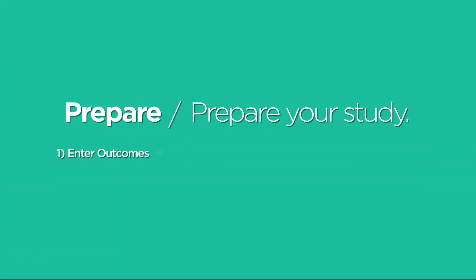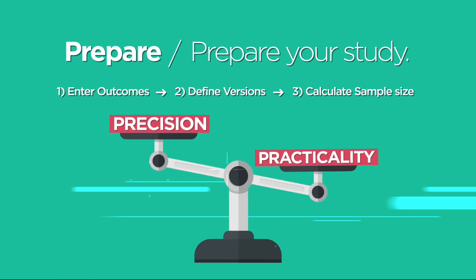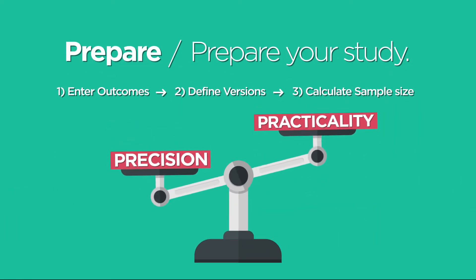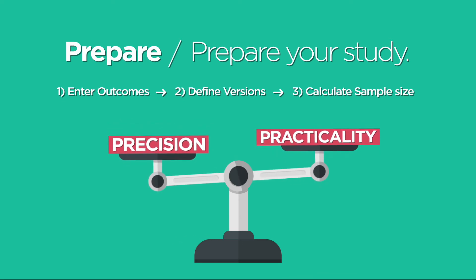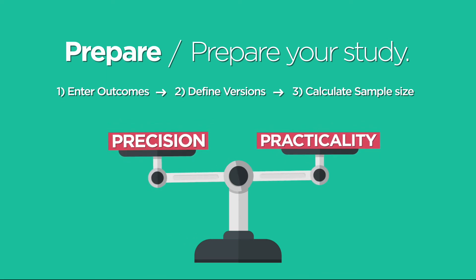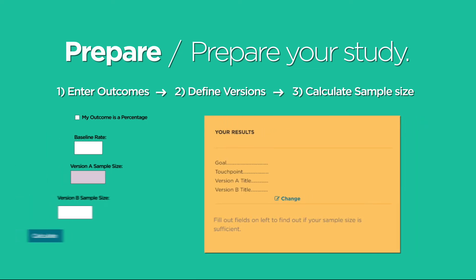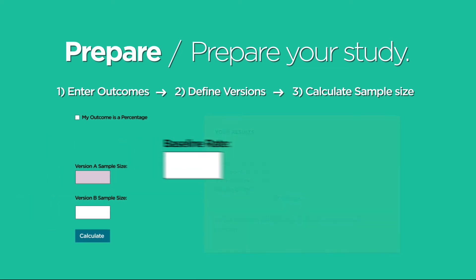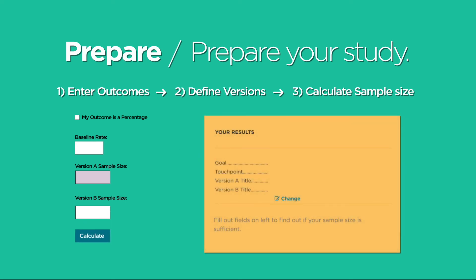Our sample size tool is designed to help you find the right balance in your A-B test — a big enough sample so that you'll be able to get a precise, accurate result, but not so much that the test will be impossible to run. To use the sample size tool, just enter the base rate, and the calculator will tell you how many households or people are just right to run your A-B test.